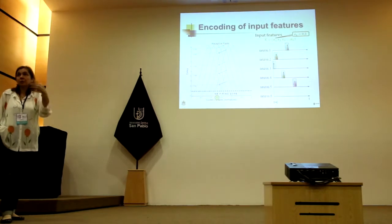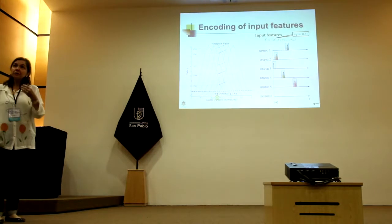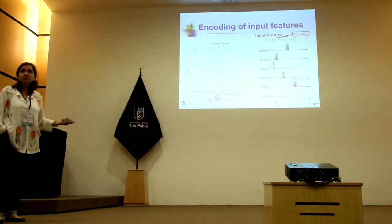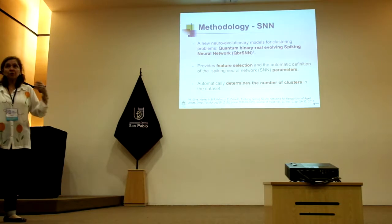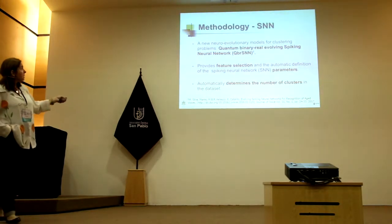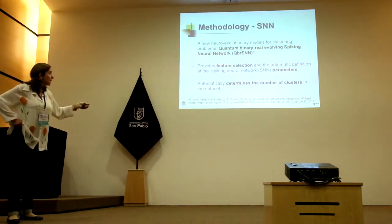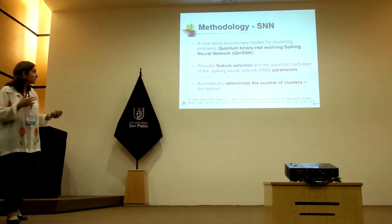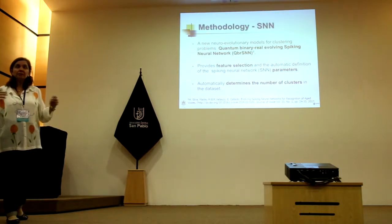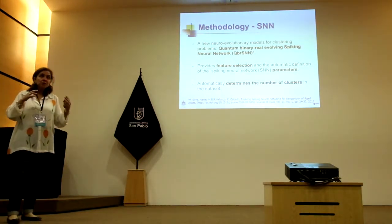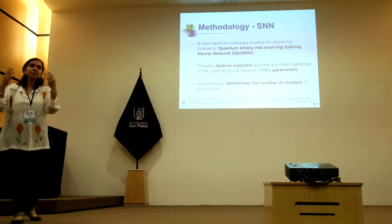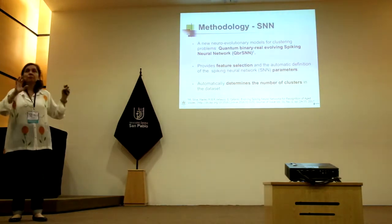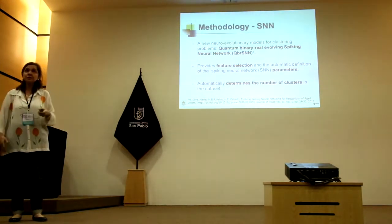Depending on which Gaussian fires and in which order, that is the order in which spikes are provided to the spiking neural network. One parameter that must be defined is the number of Gaussians — something we don't know how to set manually, so we want the evolutionary process to find this. The idea is to use the quantum binary-real approach again for feature selection, and to evolve the spiking neural network providing feature selection and all parameters automatically. Since it's unsupervised learning, it's used for clustering — and usually you don't know the number of clusters in your dataset, but the system finds the best number automatically.